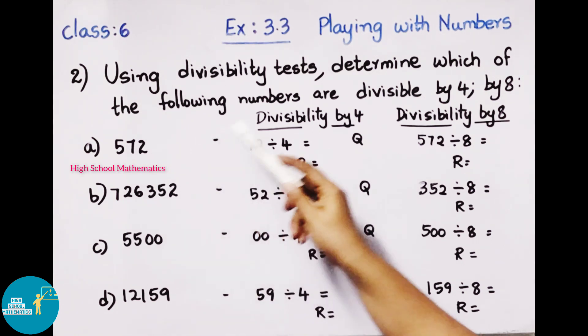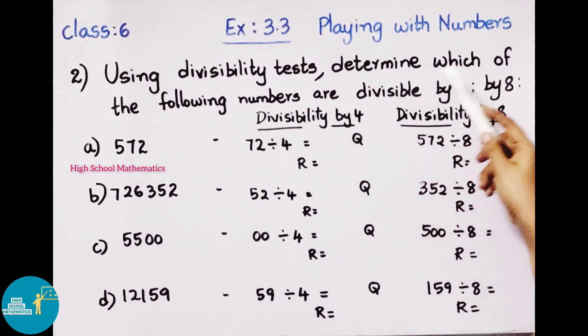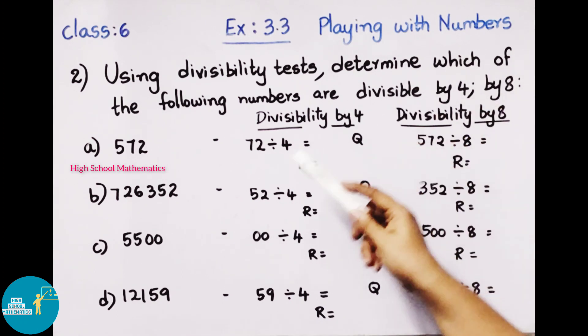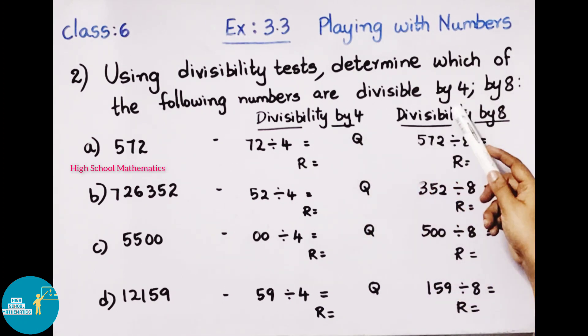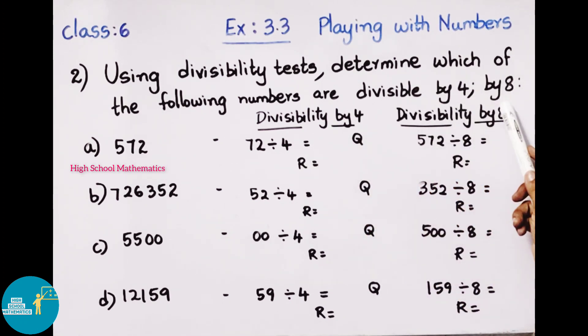Using divisibility tests, determine which of the following numbers are divisible by 4 and divisible by 8. First number: 572.